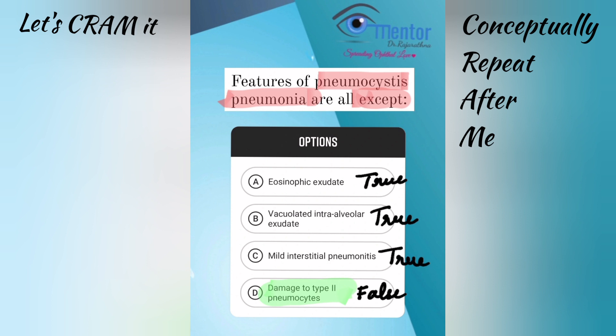The interstitial pneumonitis in Pneumocystis affects type 1 pneumocytes. Type 2 pneumocytes undergo compensatory hypertrophy. When Pneumocystis affects adults, there is predominantly alveolar involvement — A for adults, A for alveoli. In infants, there is interstitial involvement — I for infants, I for interstitial.